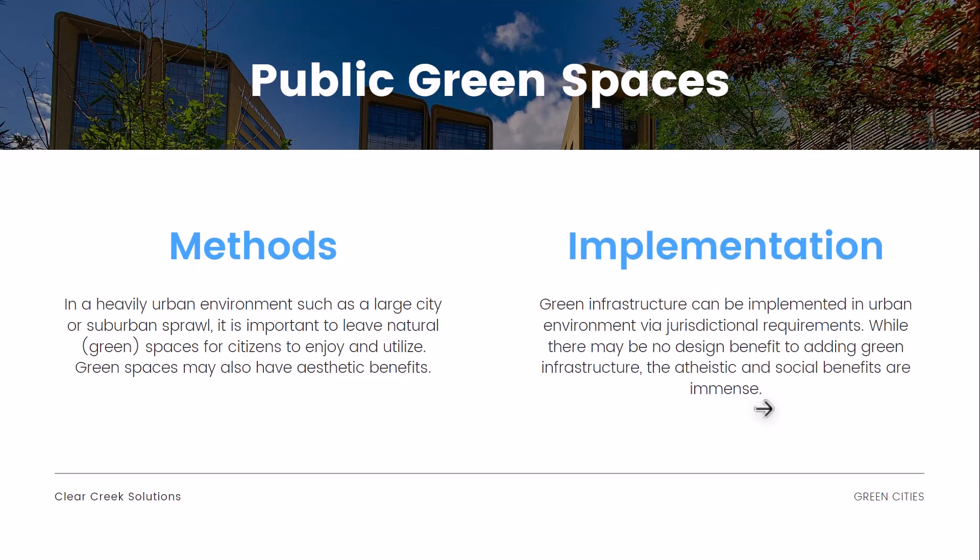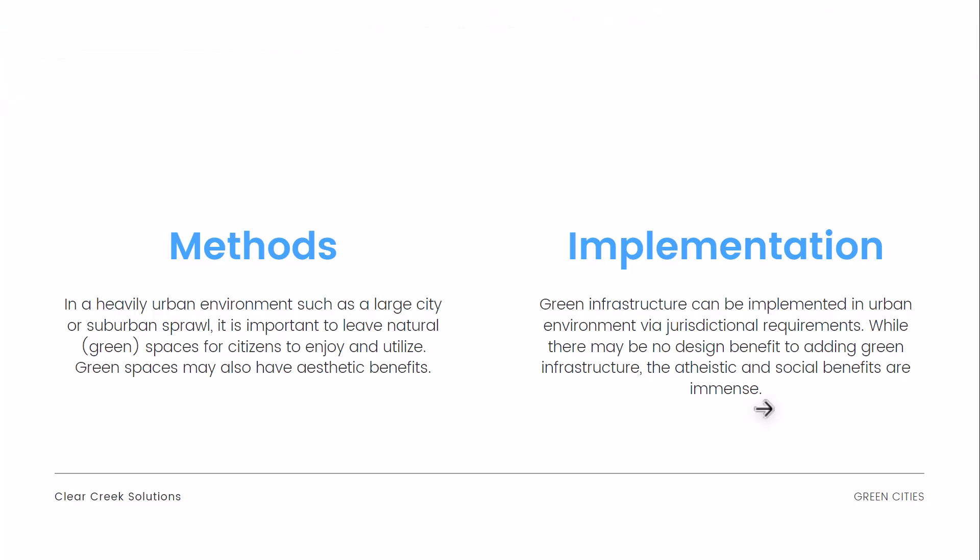In a heavily urban environment, such as a large city or suburban sprawl, it is important to leave natural green spaces for citizens to enjoy and utilize. Green spaces may also have aesthetic benefits. Green infrastructure can be implemented in urban environments via jurisdictional requirements — while there may be no direct design benefit to adding green infrastructure, the aesthetic and social benefits are immense. People have a place to gather in large urban cities or metropolises where there's nature present, and it may even draw tourists as well.